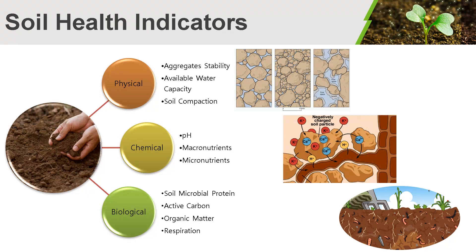Biological indicators: Soil microbial protein measures nitrogen from proteins being broken down in the soil which would then be available for plant uptake. Active carbon measures the carbon-containing compounds which are readily broken down by microbes as food — it is essentially a measure of the food stock available for microbes, which promotes nutrient availability and cycling. Organic matter influences water holding capacity, contains nutrients that can be broken down and made available, and provides food for microbes. Improving organic matter can be made easier by reducing tillage, adding other crops to a rotation, and using cover crops. Respiration measures the amount of carbon dioxide produced by microbes, which can help indicate soil microbial activity.